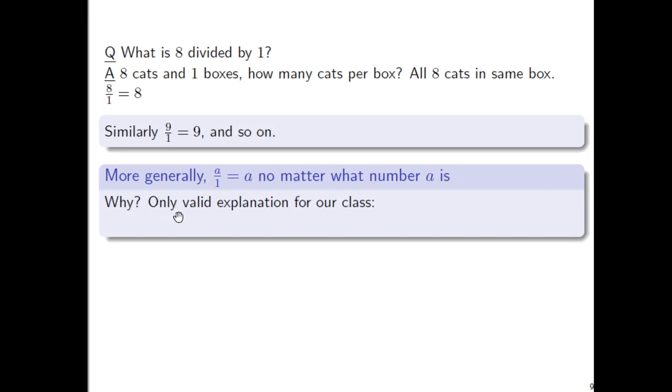And why is this true? Well, the only valid explanation we're going to accept for class is this text here. If you have A cats in 1 box, then there are A cats per box. It's basically the text with the 8s, just replaced with A's. So A divided by 1 equals A.